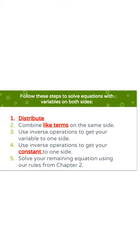Remember to follow these steps to solve equations with variables on both sides. First, you need to distribute if there are parentheses. Then, you combine like terms that are on the same side. Remember that the equal sign is a wall — you are only looking at the left side if there are like terms, and then the right side if there are like terms. You're not looking at both sides.